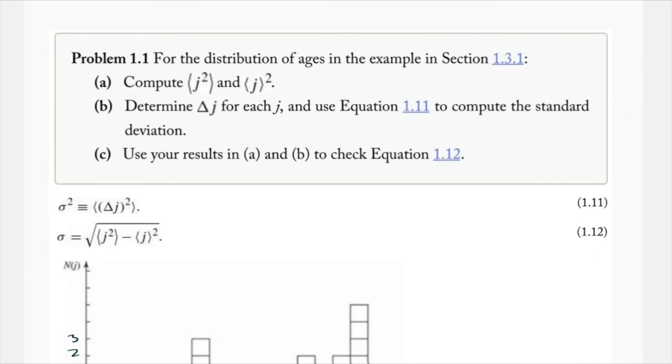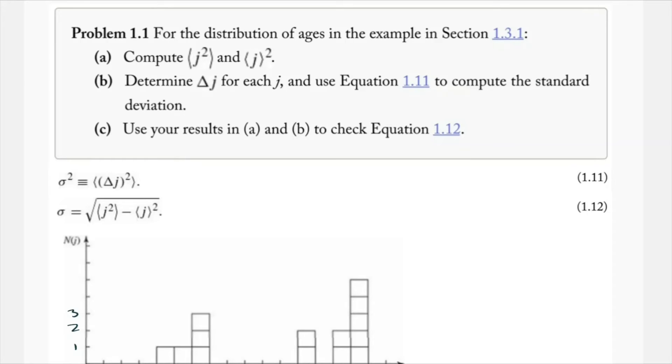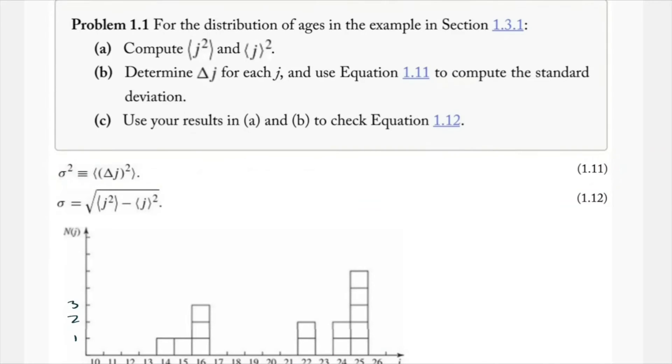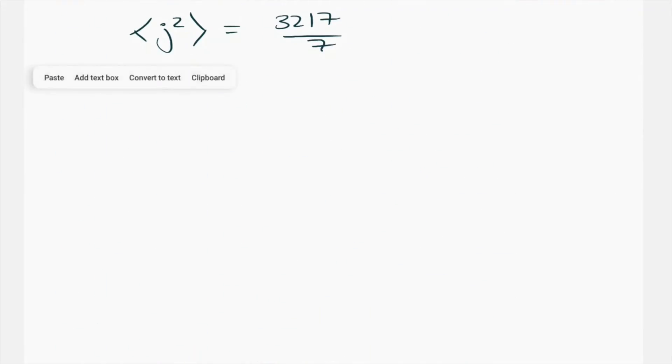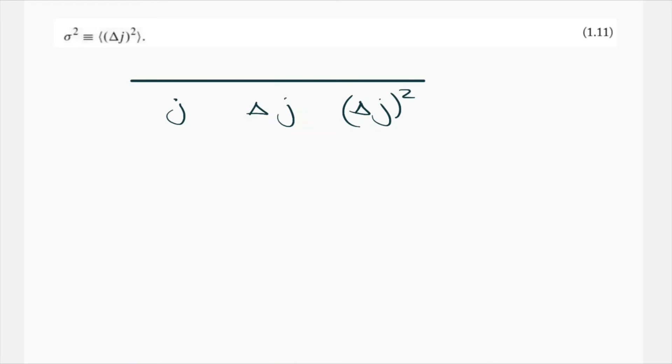Now, back to part B: determine delta j for each j, use equation 1.11 to compute the standard deviation. At this point, it's probably going to be helpful to use a table. Let's grab equation 1.11 here, paste it down there. Let's go ahead and create a table. In this table, let's include j, delta j, and also we're going to need delta j squared for the next part.